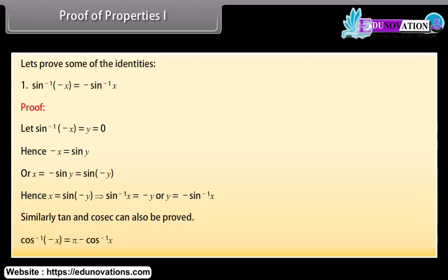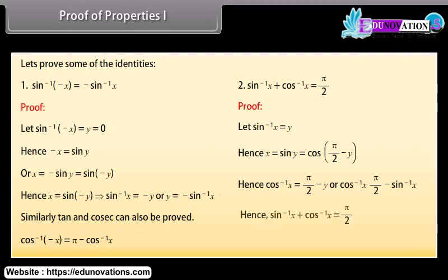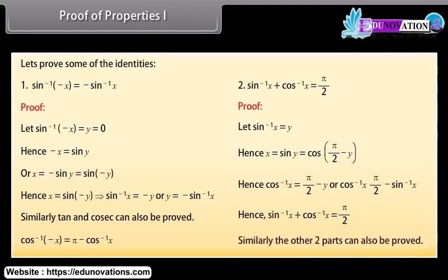cos⁻¹(−x) = π − cos⁻¹ x. Second, proof that sin⁻¹ x + cos⁻¹ x = π/2: Let sin⁻¹ x = y. Then x = sin y = cos(π/2 − y). Hence cos⁻¹ x = π/2 − y = π/2 − sin⁻¹ x, which gives sin⁻¹ x + cos⁻¹ x = π/2. Similarly, the other two parts can also be proved.